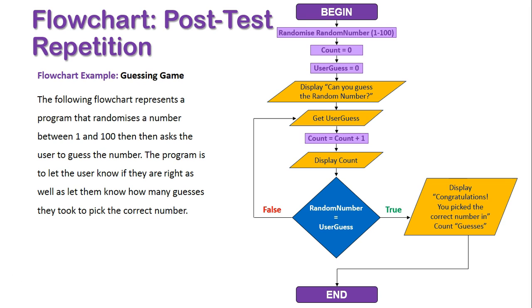I hope this gives you an understanding of how post-test repetition differs from pre-test repetition, in that the condition is assessed at the end of the loop, meaning that the loop steps have to initiate at least once, as the condition isn't assessed until after the steps have taken place.